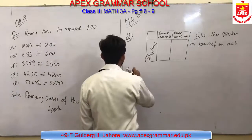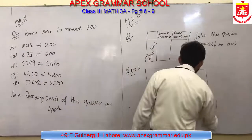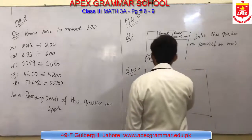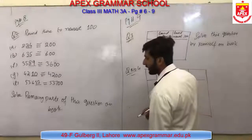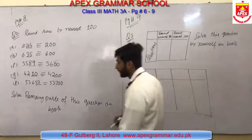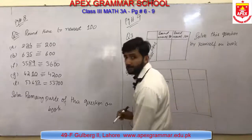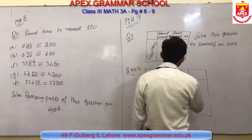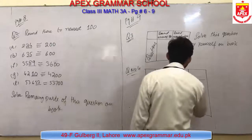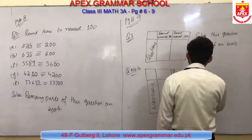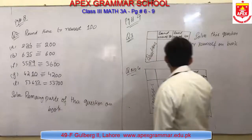Question number 4 has 4 columns: names of oceans or seas, then values, then round to the nearest 10 meters, and the last column is round to the nearest 100 meters. You also have to solve this question by yourself on your book.